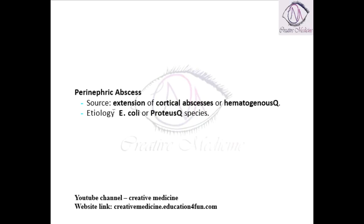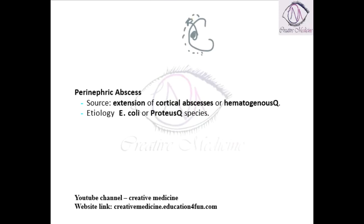Perinephric abscess mainly occurs due to the extension of a cortical abscess or hematogenous abscess. Whenever there is a cortical abscess present in the cortex, it can form an abscess around the kidney — which is the perinephric abscess — or it can spread through the blood vessels and reach around the kidney, resulting in perinephric abscess.